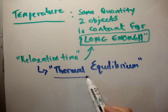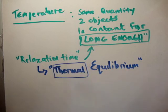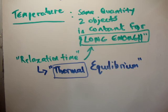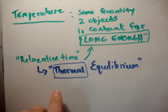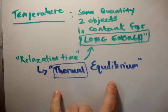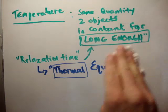Thermal equilibrium is one of three types of equilibrium. We have thermal equilibrium, we have mechanical equilibrium, and we also have diffusive equilibrium. That's pretty much all we need to know about temperature for the moment. Temperature is the property of two objects which is the same when they have been in contact for the relaxation time, and they have therefore come to thermal equilibrium.